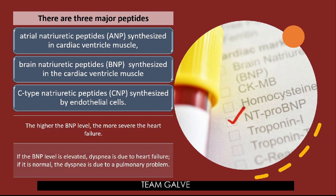Very important: BNP is the primary marker for identifying heart failure as the cause of dyspnea. The higher the BNP level, the more severe the heart failure. If the BNP level is elevated, the dyspnea is due to heart failure. If BNP is normal, the dyspnea is due to a pulmonary problem and is not heart-related.